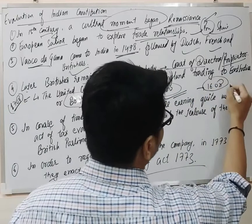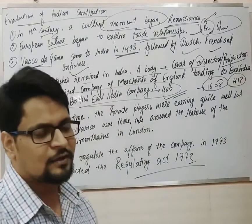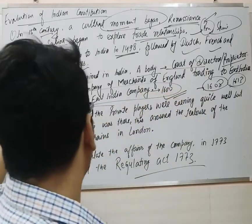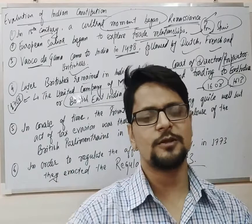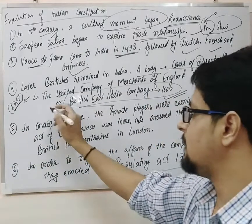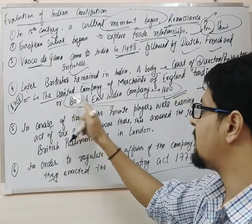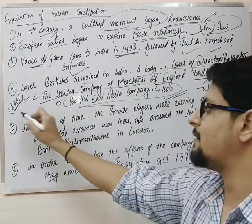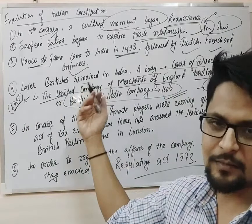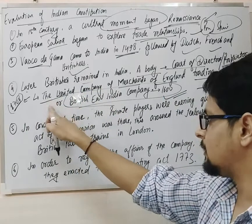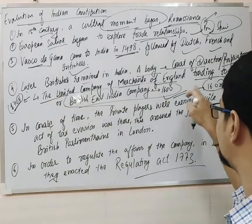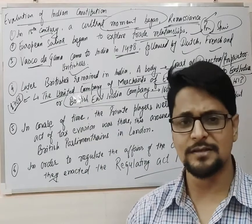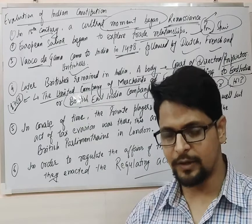They imposed their first factory in Surat, as we discussed in our modern history part earlier. Later on, after about 100 years, they incorporated all the smaller sub-companies into a single united company. The name of that company was the United Company of Merchants of England trading to East Indies. This part of the world is called East Indies. Later in 1708, the name of the company was changed to this new name: the United Company of Merchants of England trading to East Indies.